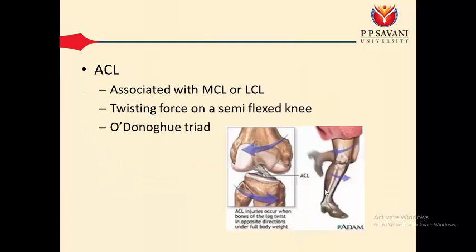The main function of the ACL is to prevent anterior translation of the tibia during knee extension in the non-weight-bearing position. When the knee is partially flexed and unlocked, a twisting force can cause ACL damage, which is very common in sports players like football and badminton players who have to turn rapidly during their game. A semi-flexed knee combined with a rotation force can create ACL damage.